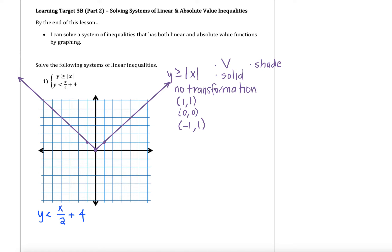The next thing I need to do is determine the shading since I have an inequality sign. We're going to go ahead and test a point. In this case, I can't test (0,0) anymore because (0,0) is actually on the graph — it's on my boundary line. So I need to pick another point that is not on my boundary line. I'm going to go ahead and use (1,2), which is right here on my graph.